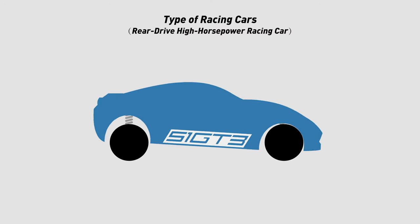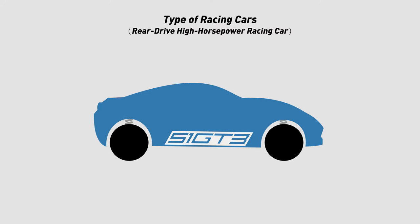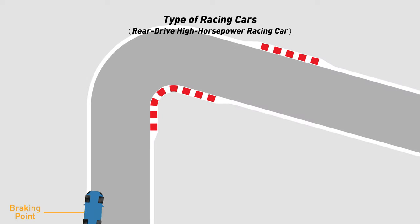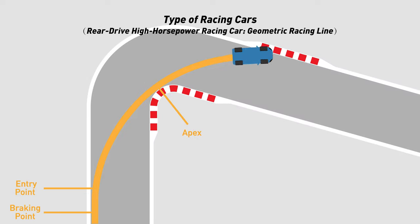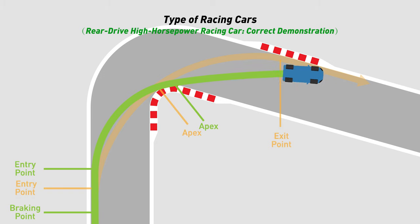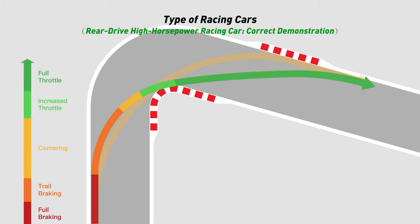On the other hand, rear-drive high horsepower racing cars, with the engine and drive wheels behind, generally have stronger acceleration capabilities. We must take advantage of its strong acceleration performance. For this kind of car, we will pursue a later entry point and later apex. Under this racing line, the car will enter the full throttle stage earlier, and it can take advantage of its fast acceleration and regain the lap time.